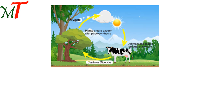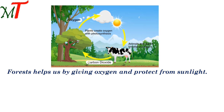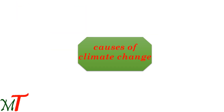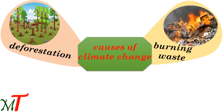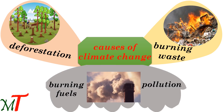Observe here: plants use carbon dioxide and give us the oxygen we need. Forests help us by giving oxygen and protecting from sunlight, so we must grow plants and expand forests. If we cut down forests, it causes climate change. The main causes of climate change are deforestation, burning waste, and burning fuels — these three main causes pollute the environment.